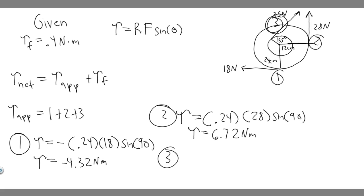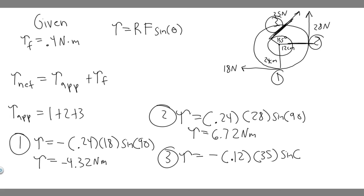For force 3: it causes clockwise rotation, so it's negative. The radius is 12 cm, which is 0.12 m, and the force is 35 N. The angle between radius and force is 90°, so sine of 90 is 1. Torque 3 = −0.12 × 35 = −4.2 Nm.